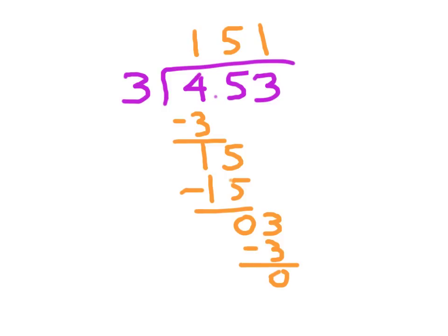There are no more digits to bring down. All that's left is we have to place that decimal point. Where would you have placed it? And how is it that you would have read your answer? Did you place it there? Did you read your answer 1 and 51 hundredths? Let's read the whole problem. 4 and 53 hundredths divided by 3 is 1 and 51 hundredths.